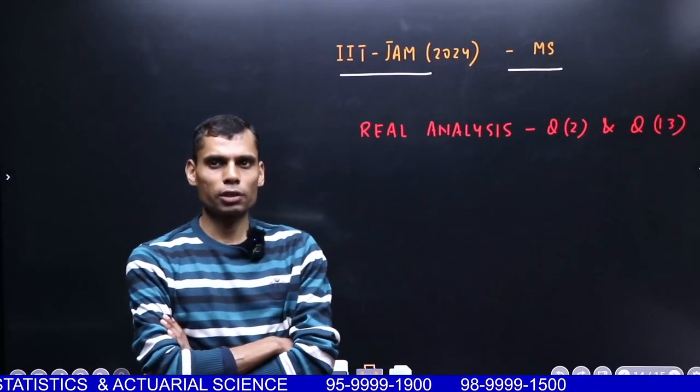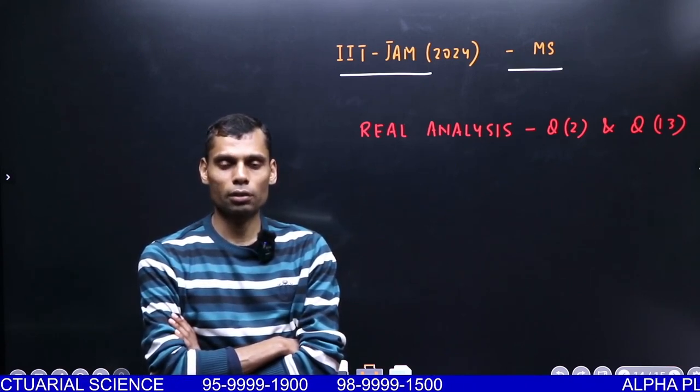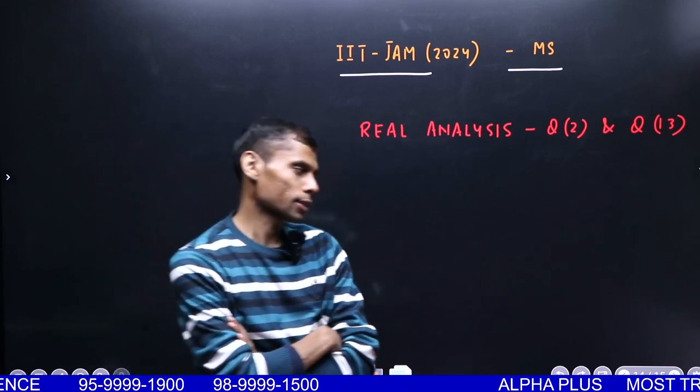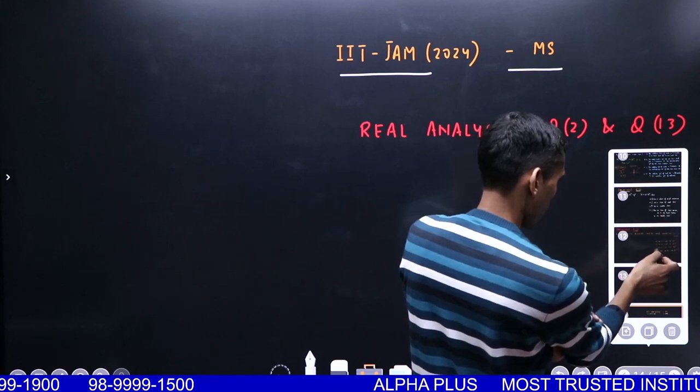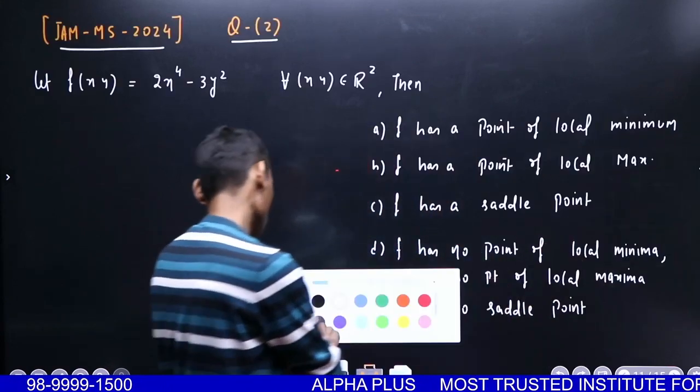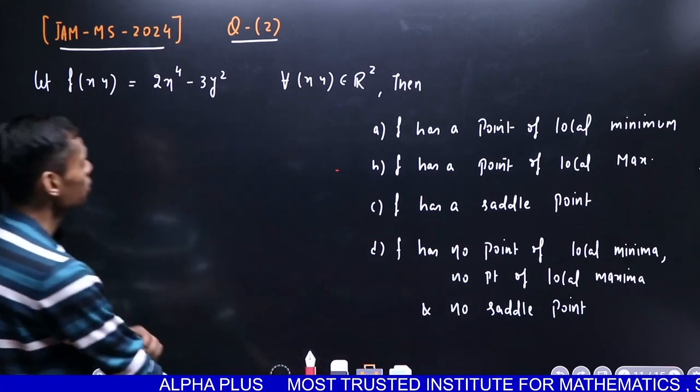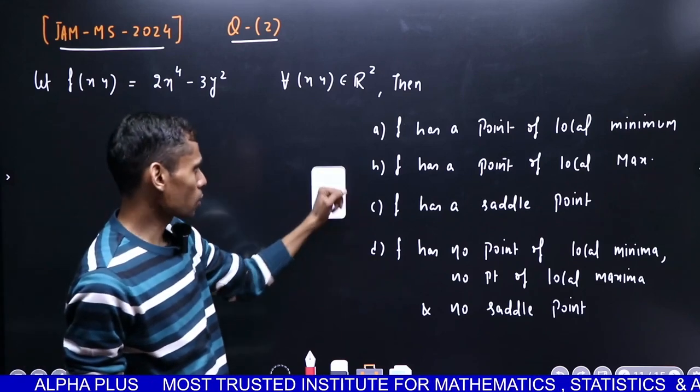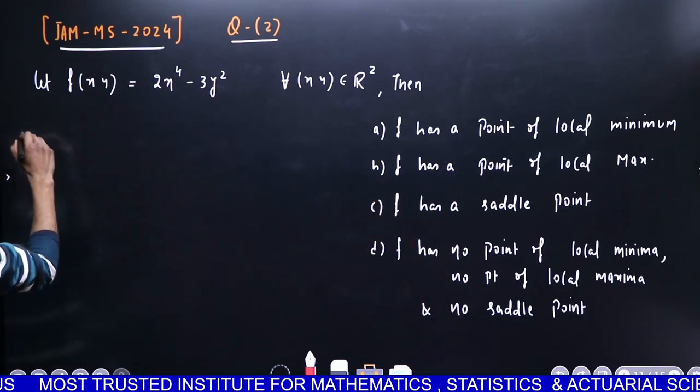Hello my dear students, today we shall solve question number 2 and question number 13 from IIT JAM paper MS-2024. Both questions are logical. The first question is f(x,y) = 2x⁴ - y³. We need to determine if (0,0) is a point of local maxima, point of local minima, or a saddle point - a typical question for a two-variable solution function.